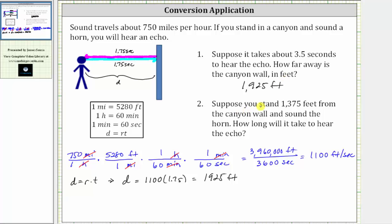Now let's work on number two. Suppose you stand 1,375 feet from the canyon wall and sound the horn — how long will it take to hear the echo? Before you can hear the sound, it has to travel from you to the wall, which is 1,375 feet, and then from the wall back to you, which is another 1,375 feet. Therefore, the total distance d is two times 1,375 feet.